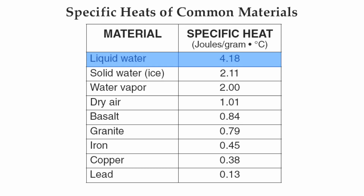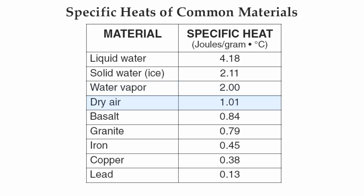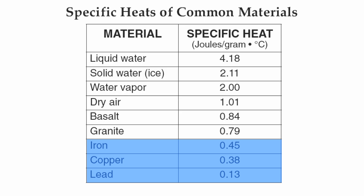Below that is going to be your solid water — we call that ice — with a specific heat of 2.11. Water vapor is next at 2, then dry air, then basalt, then granite. And finally, the three bottom substances are going to be our three metals: iron, copper, and lead.